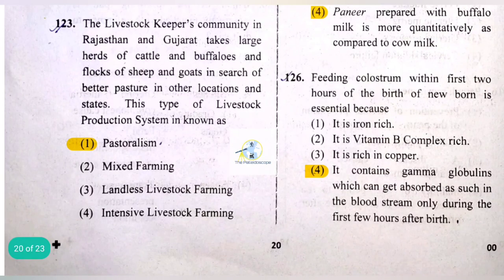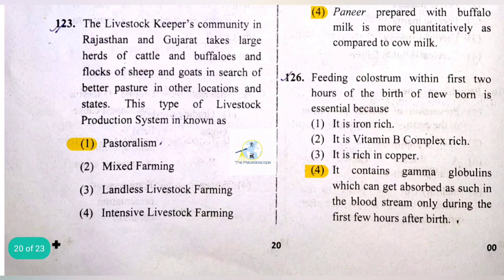The livestock keepers' community in Rajasthan and Gujarat that takes large herds of cattle, buffaloes, sheep, and goats in search of better pasture in other locations and states — this type of livestock production system is known as pastoralism.